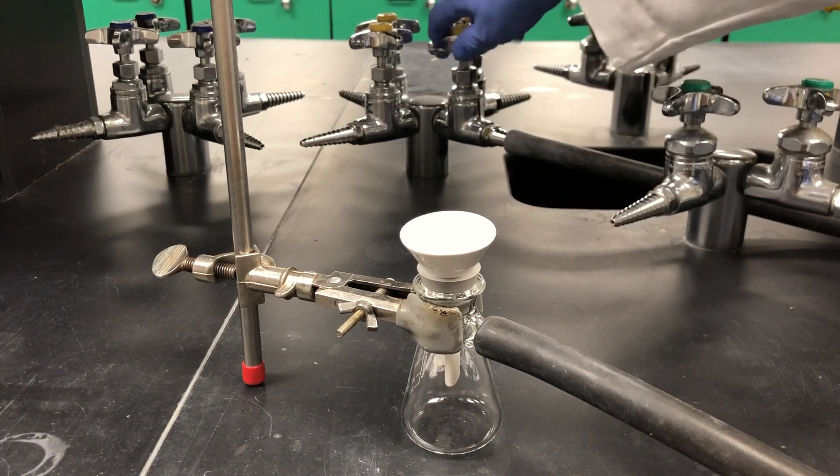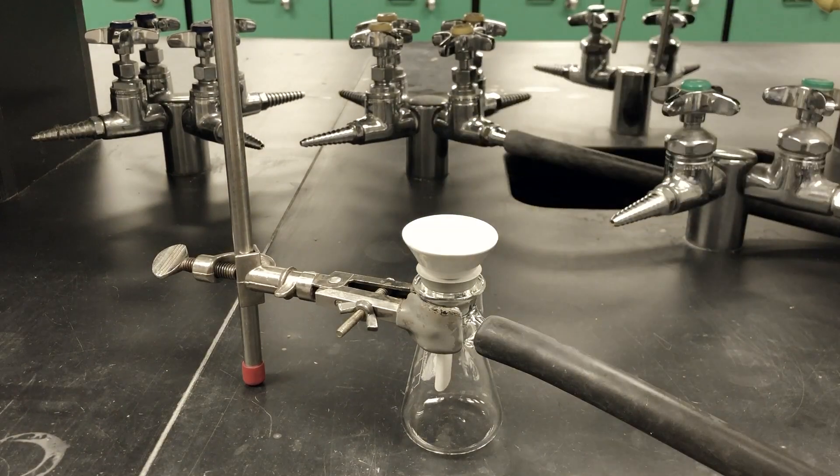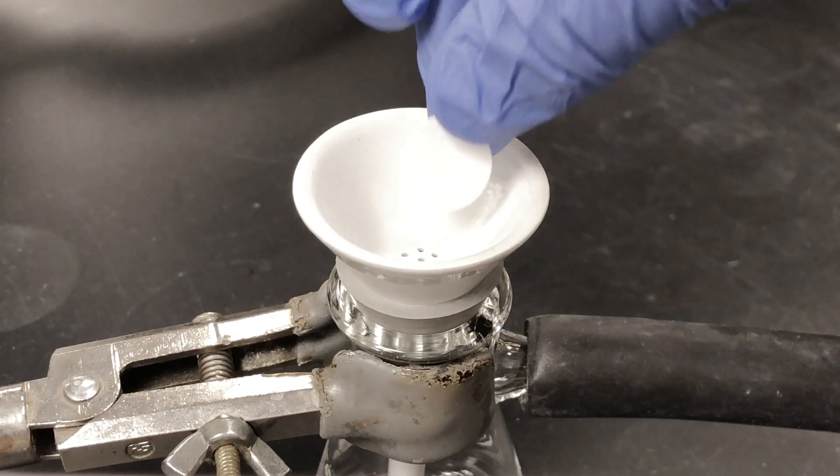You are now ready to start the vacuum filtration process. Turn on the vacuum tap and check your setup to make sure everything is airtight. Now place your 1.5 cm filter paper in the Hirsch funnel.